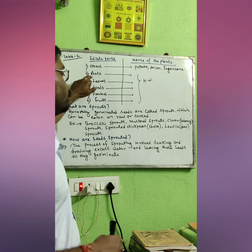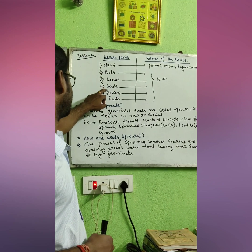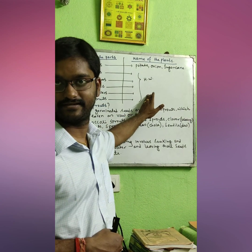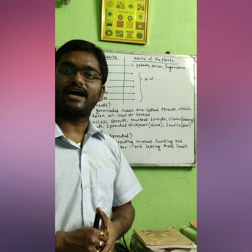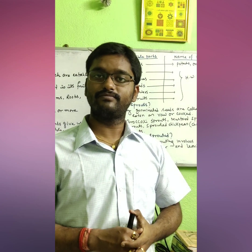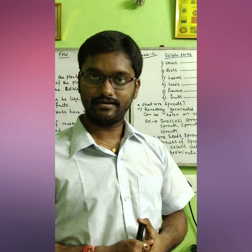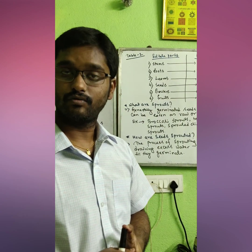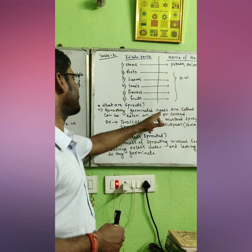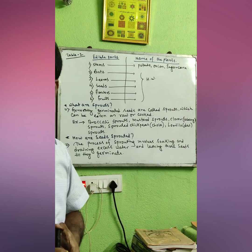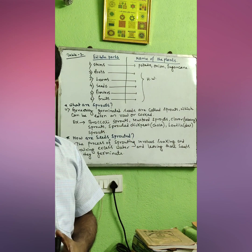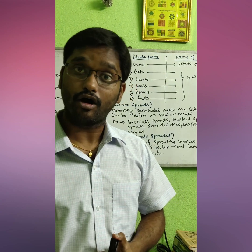So roots, leaves, seeds, flowers, and fruits — you have to mention the names of the plants from which these parts can be eaten. Now, one more important keyword from this chapter is sprouted seeds. Germinated seeds are called sprouts, which can be eaten raw or cooked. Sprouted seeds or germinated seeds are known as sprouts.